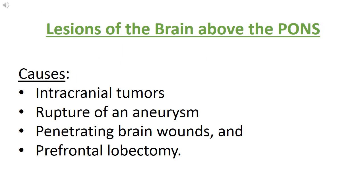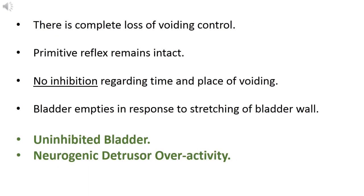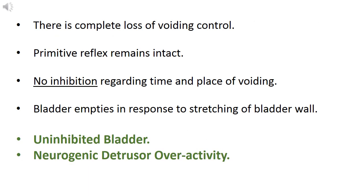We will see from top to bottom. First of all, lesion of brain above the pons. The causes include intracranial tumours, rupture of an aneurysm, penetrating wounds and lobectomy. As the lesion is in the brain, there is complete loss of voiding control. There is no inhibition regarding time and place, so bladder empties in response to stretching of the bladder wall. So it is called as uninhibited bladder. Newer terminology for this is neurogenic detrusor overactivity.